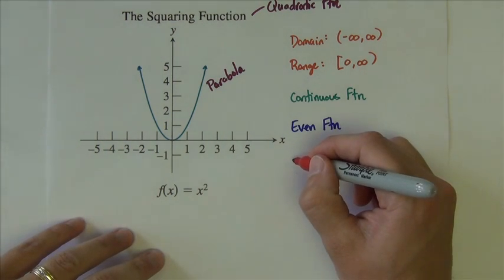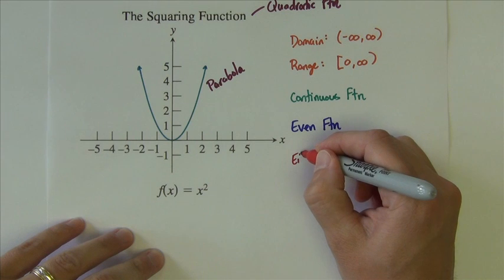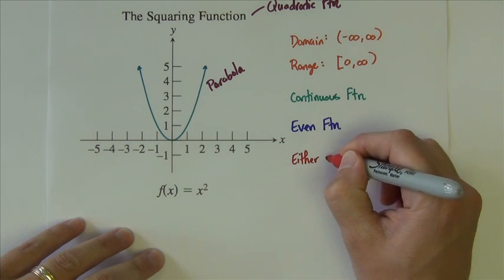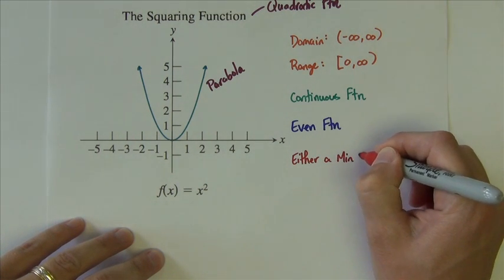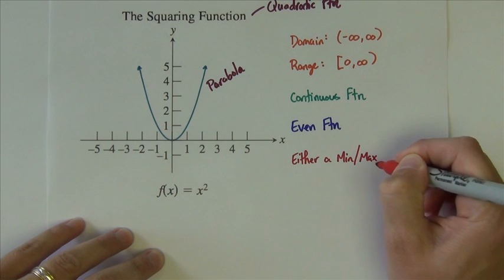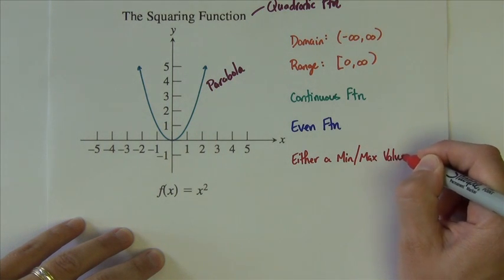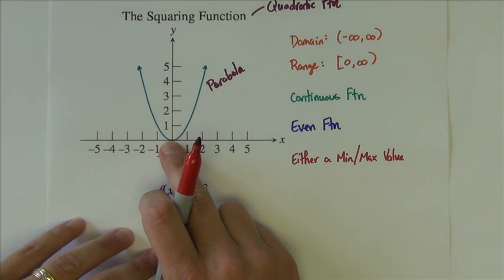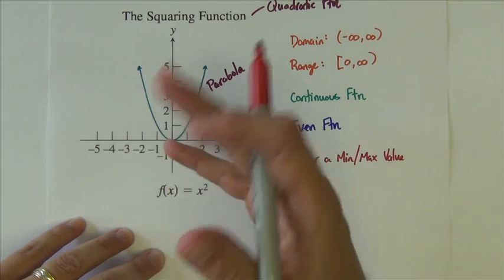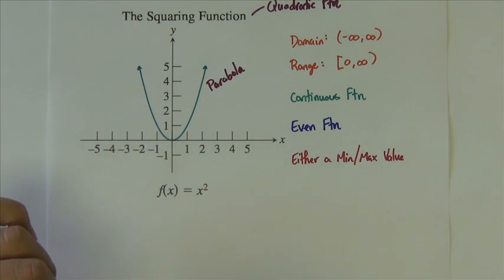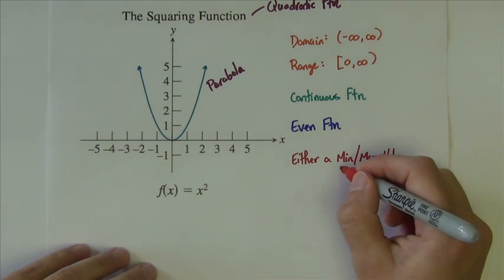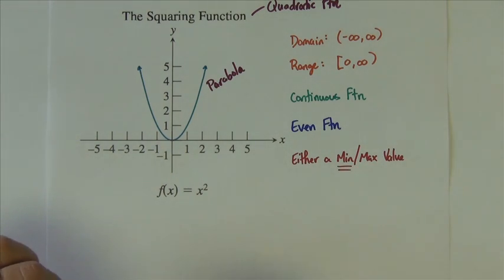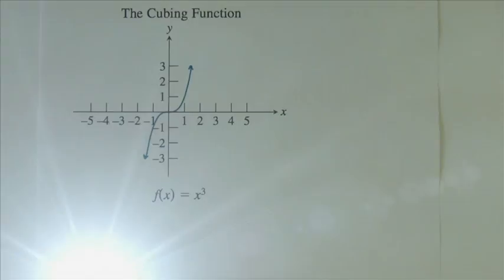And all squaring functions have either a minimum or a maximum value. Now this one has a point that is at the bottom, and then it goes up forever. But if it's flipped upside down, it could have a point at the top. So it's either going to have a minimum or a maximum value. This one in particular, the basic one, has a minimum.